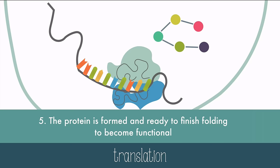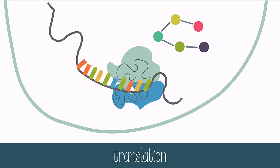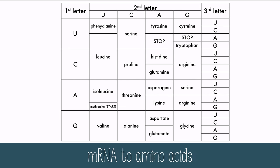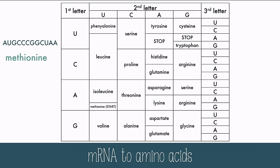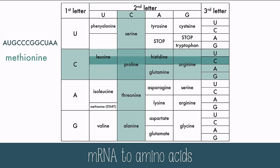That's the end of protein synthesis. We can figure out the sequence of amino acids using the mRNA and amino acid chart. Starting with the first three letters, AUG: the first letter is A, which narrows it down to this row; the second letter is U, which narrows it down to this column; and the third letter is G, which means that this is methionine — the starting amino acid. Next is CCC: second row, second column, and every third letter gives the same amino acid, proline.